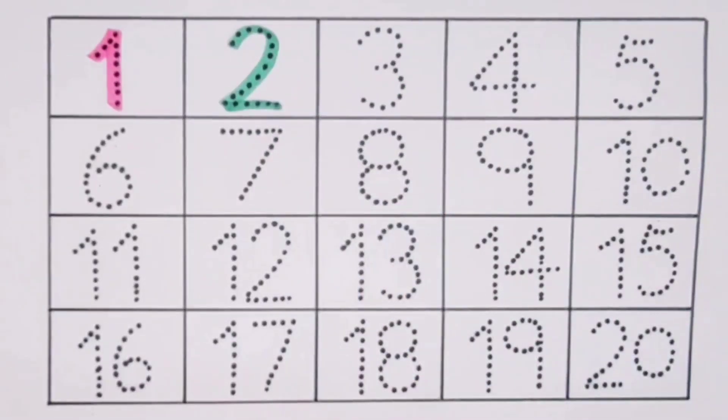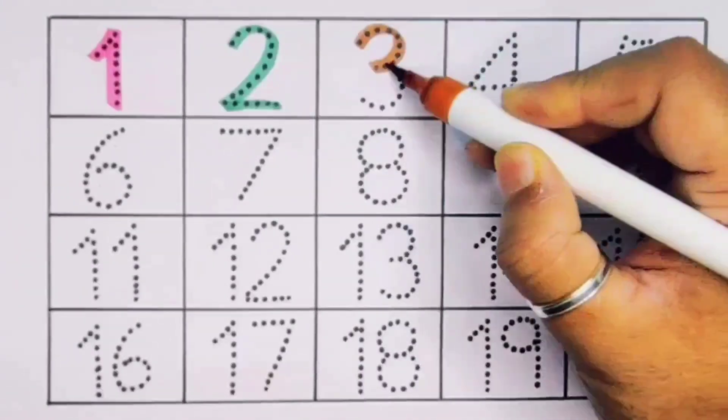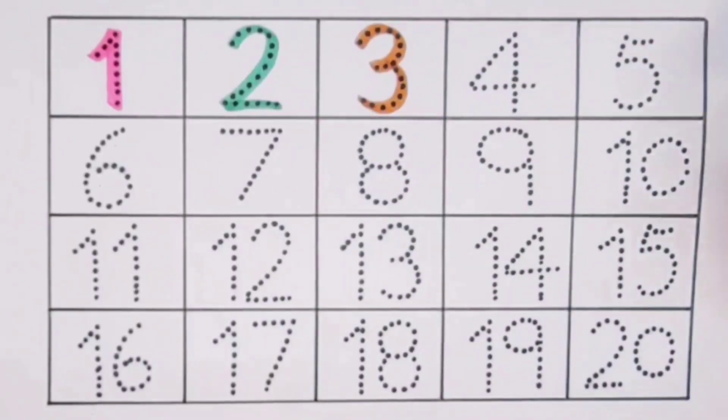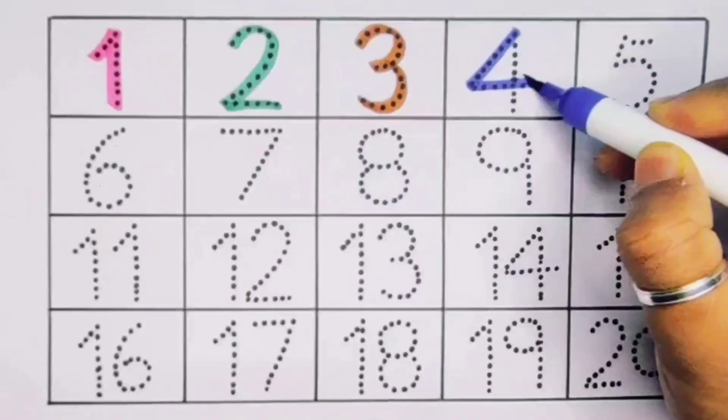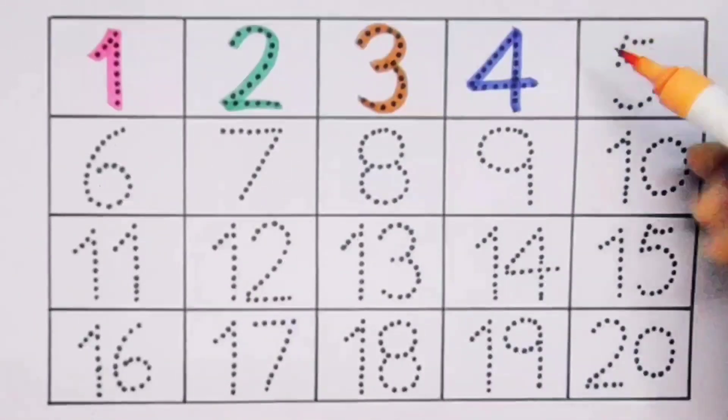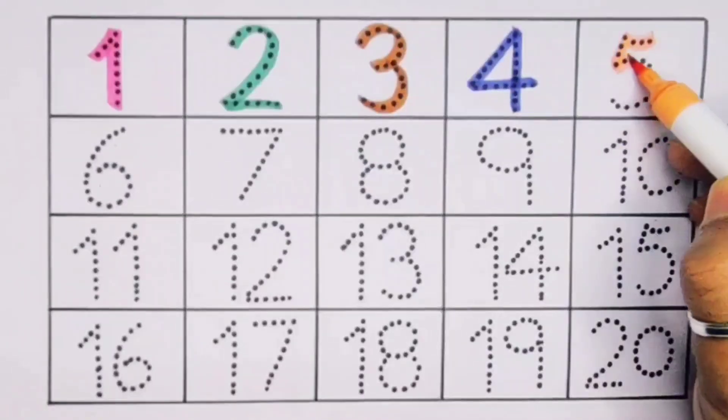Next 3, number 3. Next kids, 4, number 4, next 5, number 5.